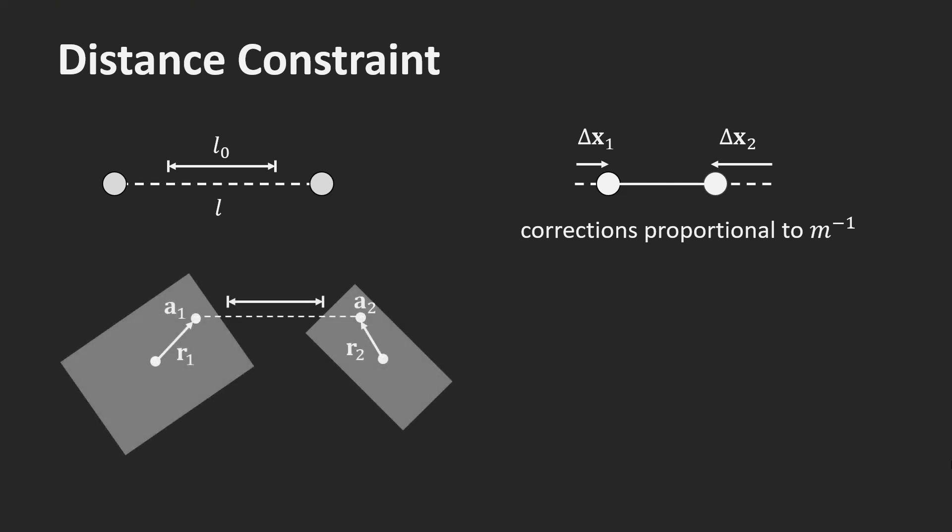For two rigid bodies, we specify the two attachment points relative to the center of mass by two vectors R1 and R2. To solve the constraint, we need R1 and R2 to be in the global frame. Because we typically want the points to stay in the same location of the body, we store R1 and R2 in the local frame of the bodies. Then, to solve the constraint, we rotate them back into the global frame using the body's current transformations.